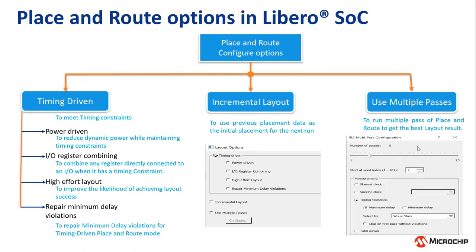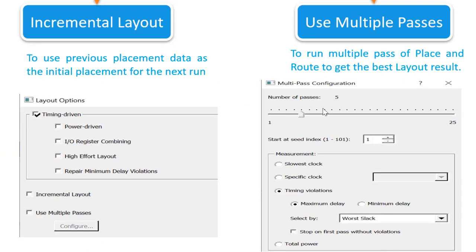This figure shows the different configuration options available under the Multiple Pass option. The user can set the number of passes from 1 to 25, which specifies how many times the user wants to run the PNR flow. By starting at Seed Index, the index specifies into the array of random seeds which is the starting point for the passes. The Slowest Clocks option allows the tool to use the slowest clock frequency in the design for a given pass, or the user can specify the clock frequency used in the design for a given pass.